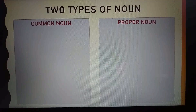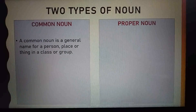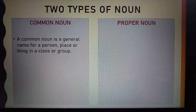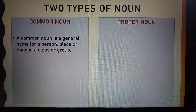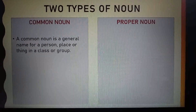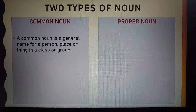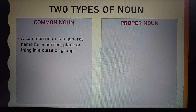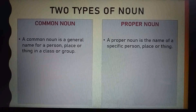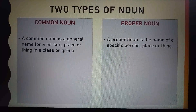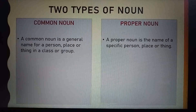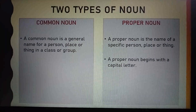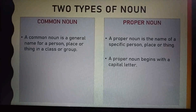What is a common noun? A common noun is a general name for a person, place or thing in a class or group. What is a proper noun? A proper noun is the name of a specific person, place or thing. A proper noun begins with a capital letter.